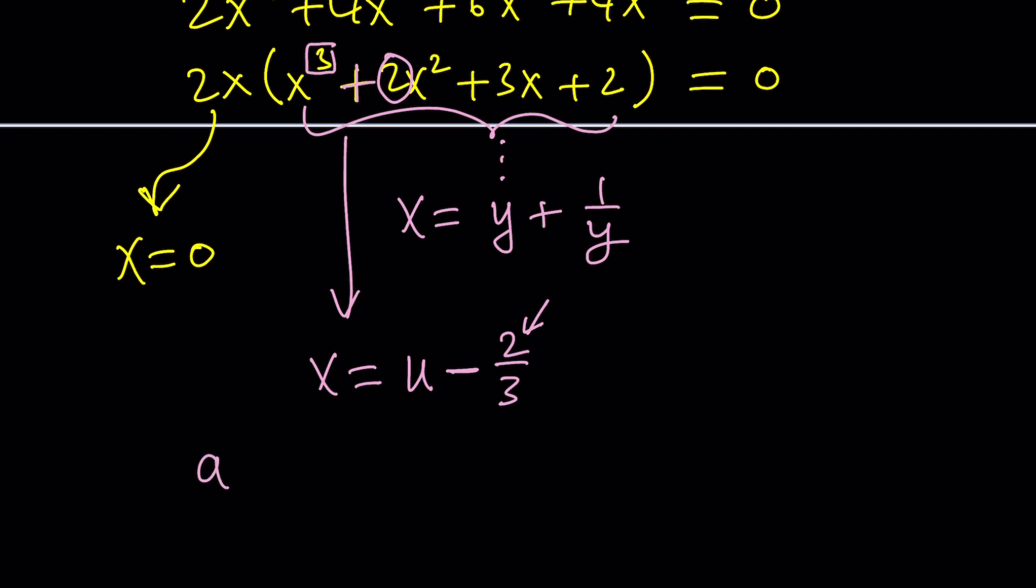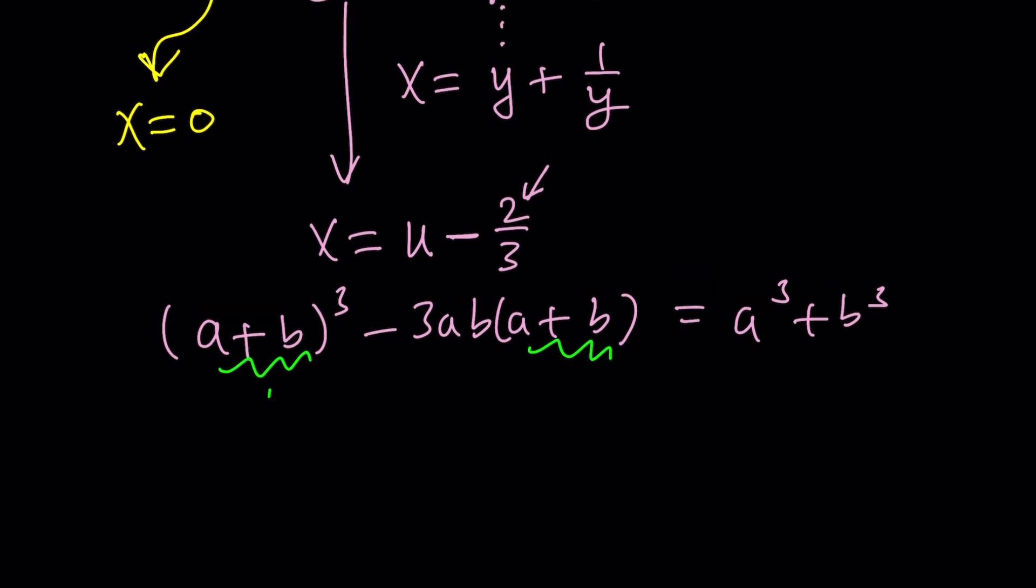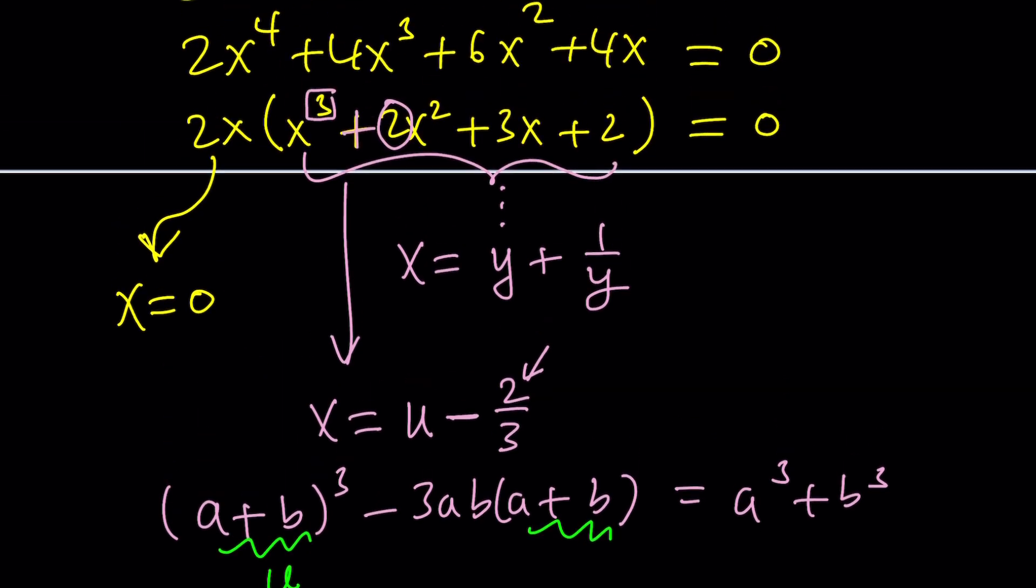And to solve the depressed cubic, you can go ahead and use the following formula. And this is an identity that we use in algebra. You could probably easily verify that. And if you set a plus b equal to x, or in this case that will be u, then you'll get an equation whose solution is a plus b. And then you can find a and b and just add them up to find u. So that would be the method that I would be using if I proceeded with the solution.